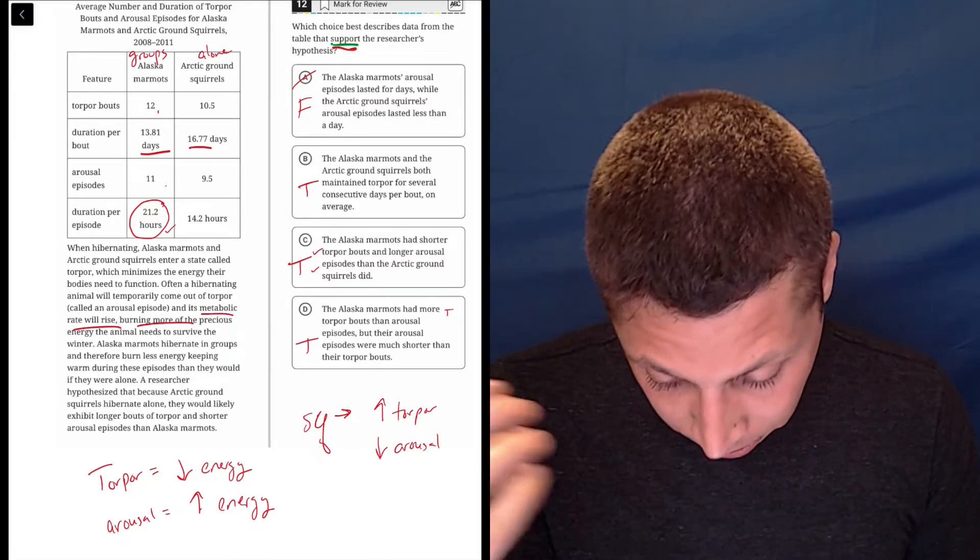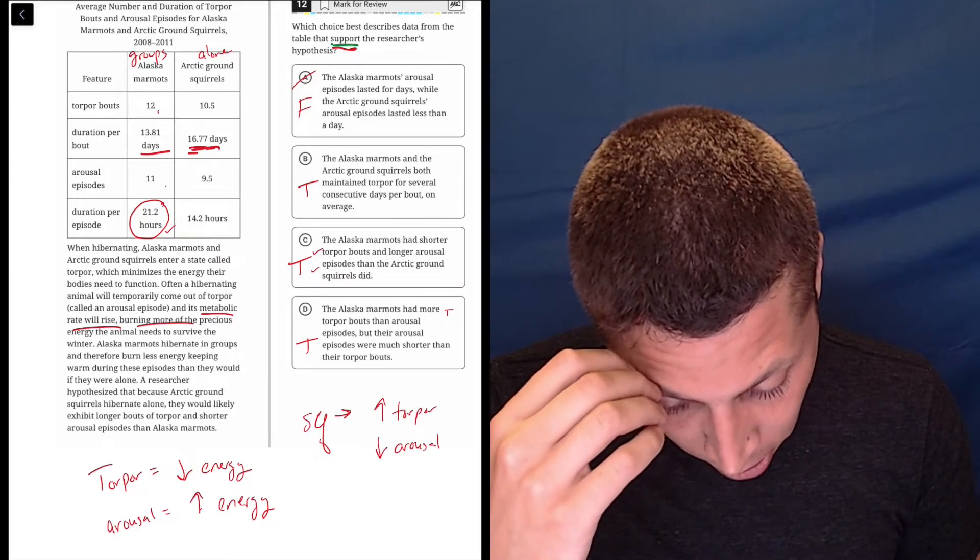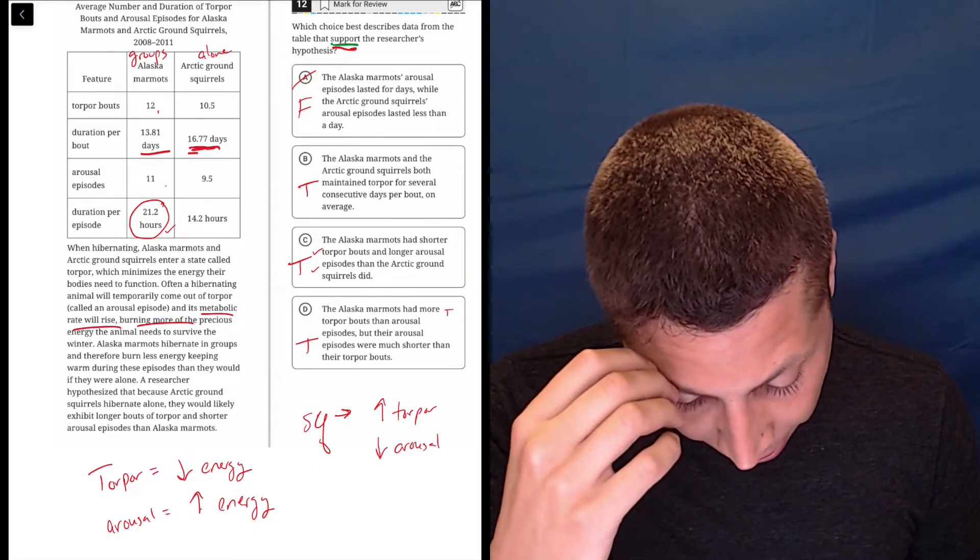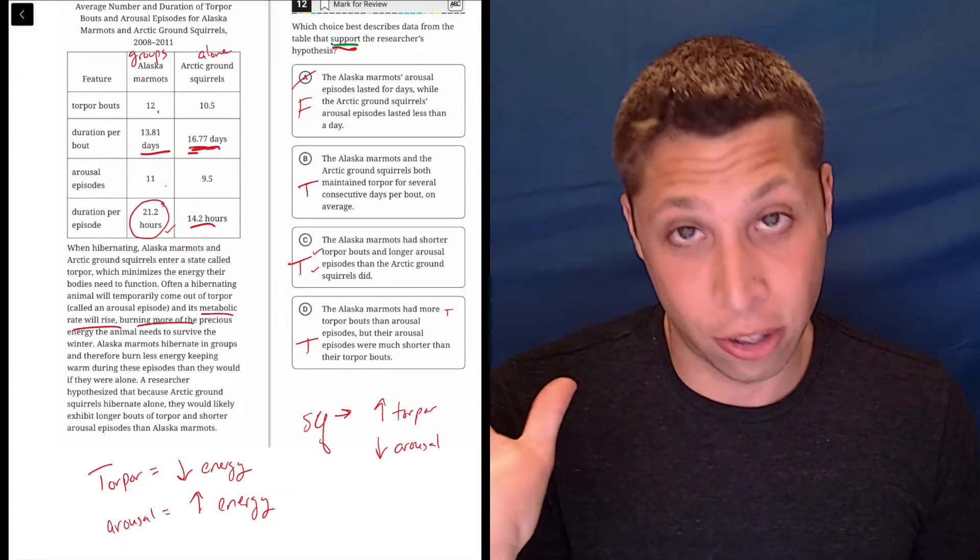Is that true? So more torpor, yeah, longer, longer, right? They're 16.77. And less arousal, yep, 14.2. So that checks, that checks out. So we need something that talks about those two things.